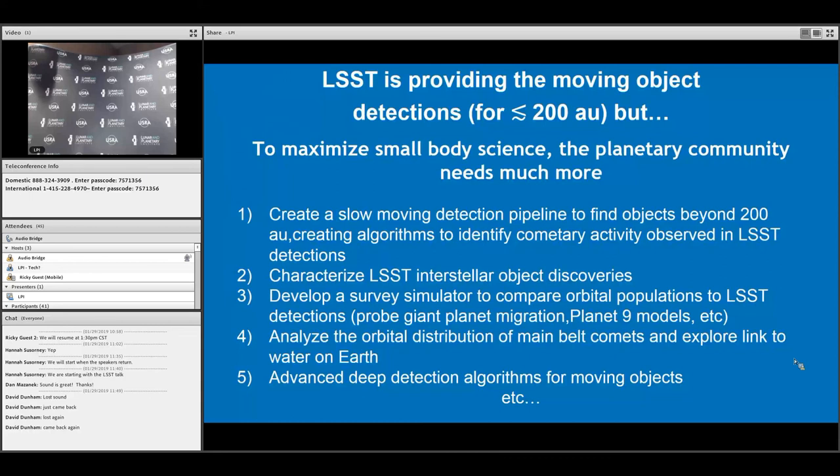LSST is providing moving object detection out to about 200 AU in distance. Beyond that, the pipeline is not necessarily designed to find those objects. Somebody else is going to have to write that very distant moving object pipeline.